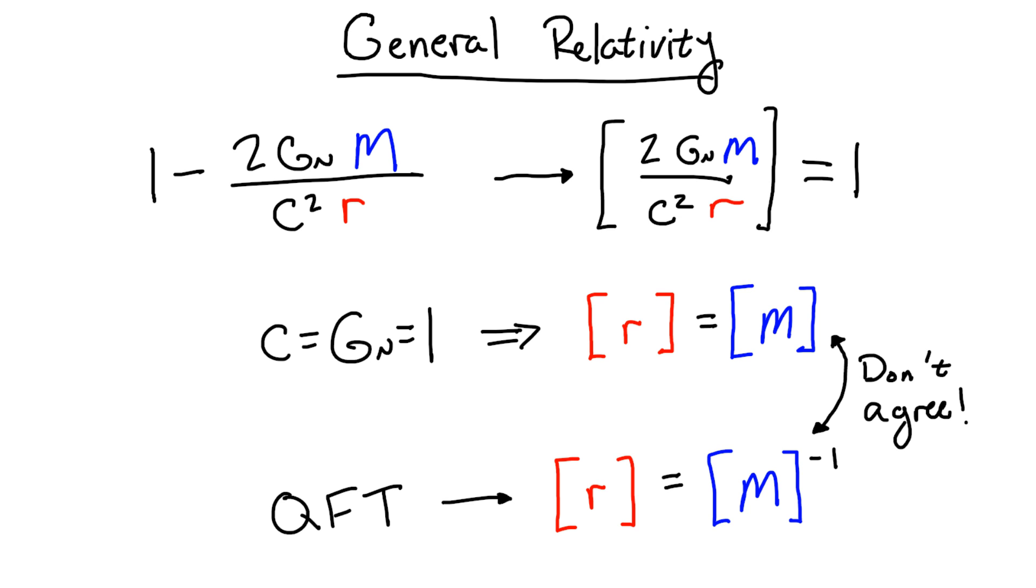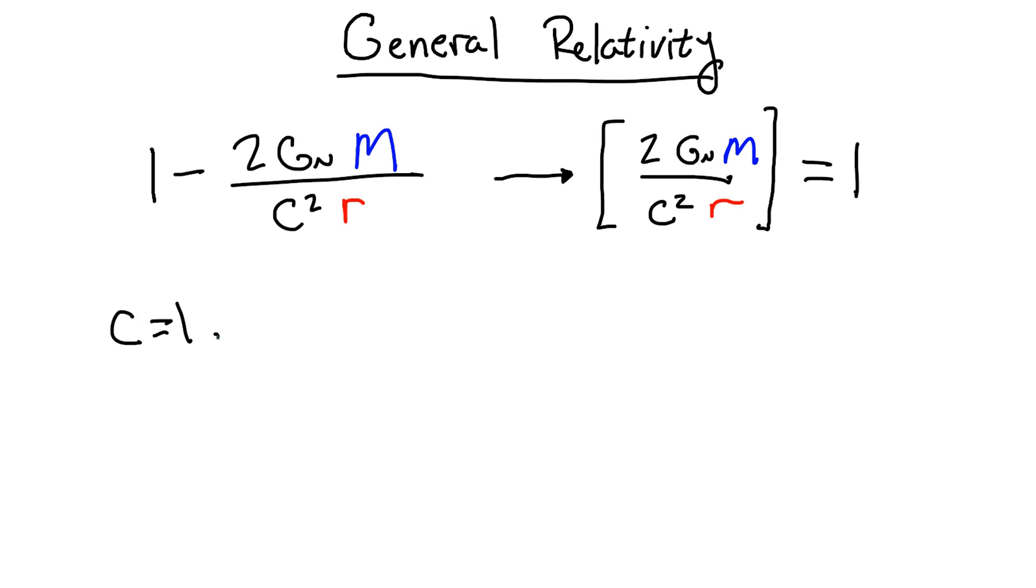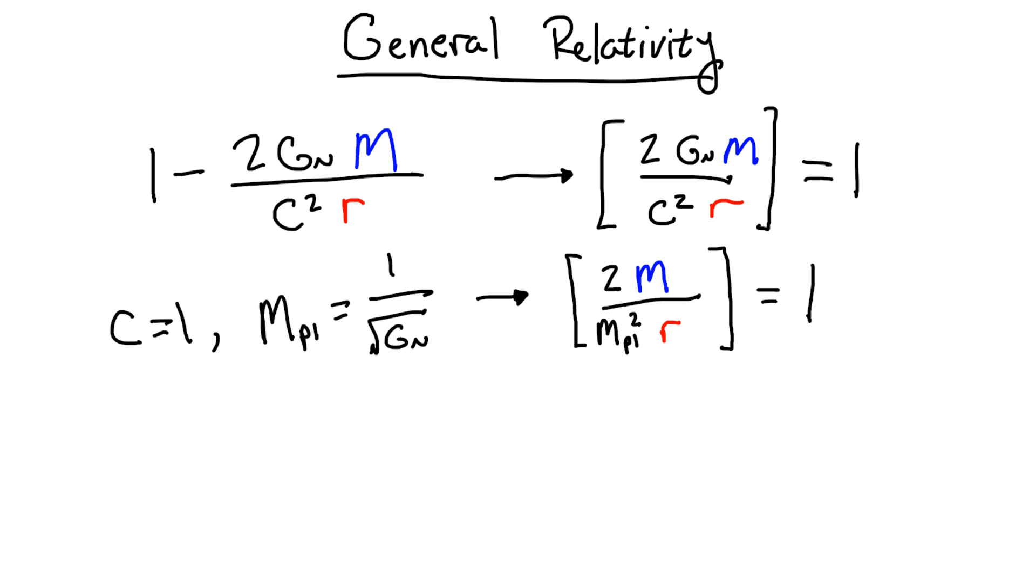This is typically done by introducing a new constant known as the Planck mass, which is just equal to 1 over square root of g in natural units. When we substitute this into our expression, assuming that the Planck mass has units of mass, then the term we're worried about is dimensionless only if r has the inverse dimensions of m, which agrees with quantum field theory.